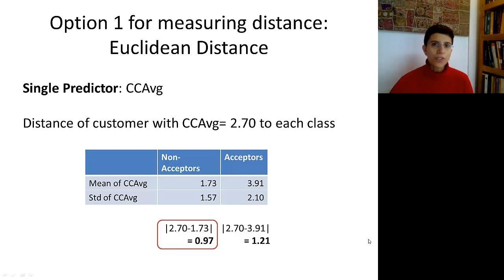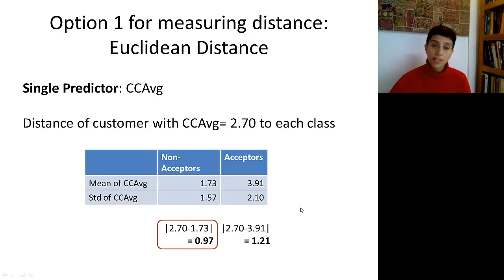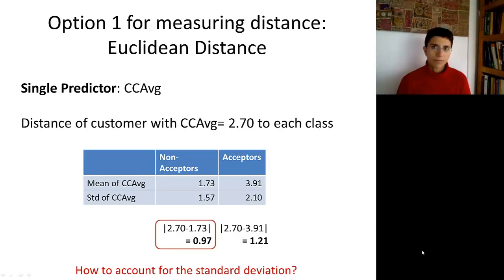But how about the standard deviation? We didn't take that into account at all when computing the Euclidean distance. Notice that the non-acceptors standard deviation is much smaller — in other words, the spread of credit card spending among the non-acceptors is smaller than among the acceptors. We would want to take that into account conceptually. Is there a method that can help us incorporate the standard deviation into the Euclidean distance?